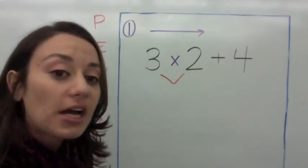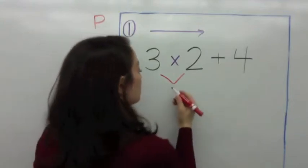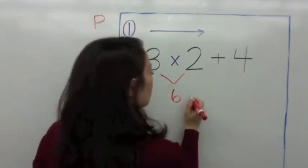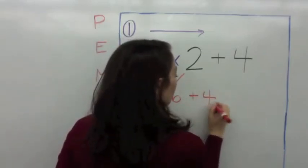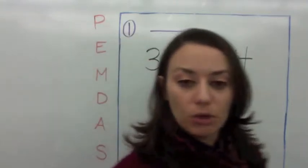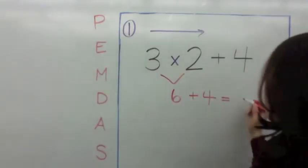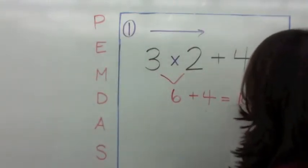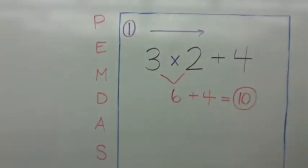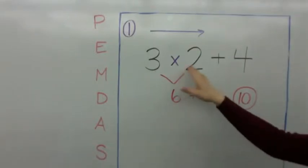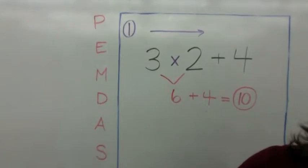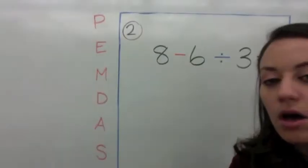We start with multiplication: what is 3 times 2? Three times 2 is 6. Then bring down the plus 4. Now you can solve 6 plus 4. What is 6 plus 4? Six plus 4 is 10. So 3 times 2 plus 4 equals 10.